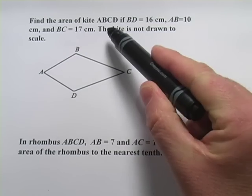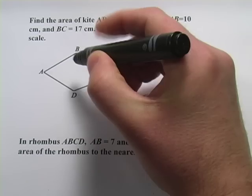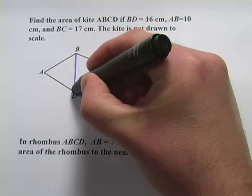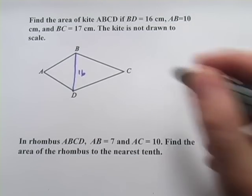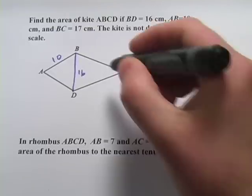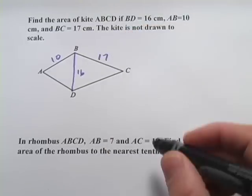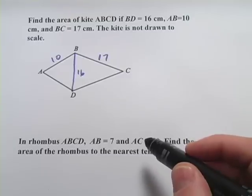It says, find the area of the kite ABCD if BD equals 16 centimeters, so that's what we call a diagonal here. BD is 16, and AB, they're giving us one of the sides, is 10, and another side BC is 17. It says the kite is not drawn to scale. How are we going to go about solving this?